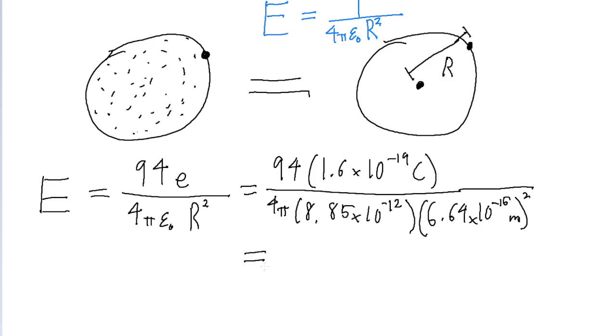Putting this into a calculator, we find the magnitude of the electric field is about 3.07 × 10²¹ N/C.